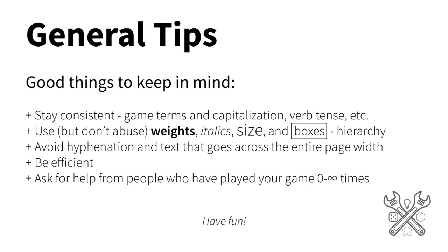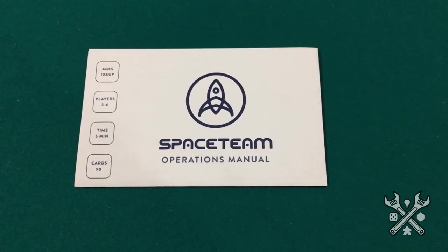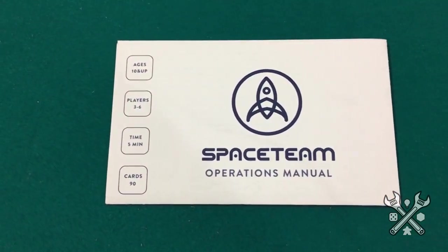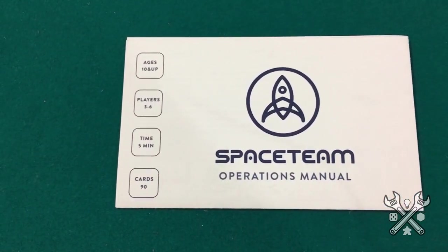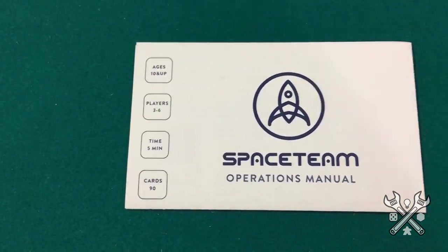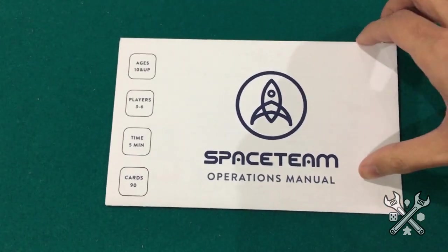Finally, I've had some really great experiences asking for help from players who have played the game both zero times and multiple times. The zero-times approach is referred to as blind playtesting, whereas multiple-time players can help in rephrasing a rule that makes sense to you but doesn't to your players. And before I forget, it's also really useful to put the essential game information — number of players, playtime, and suggested age — on the cover or inside cover, as well as any credits you might like to include.